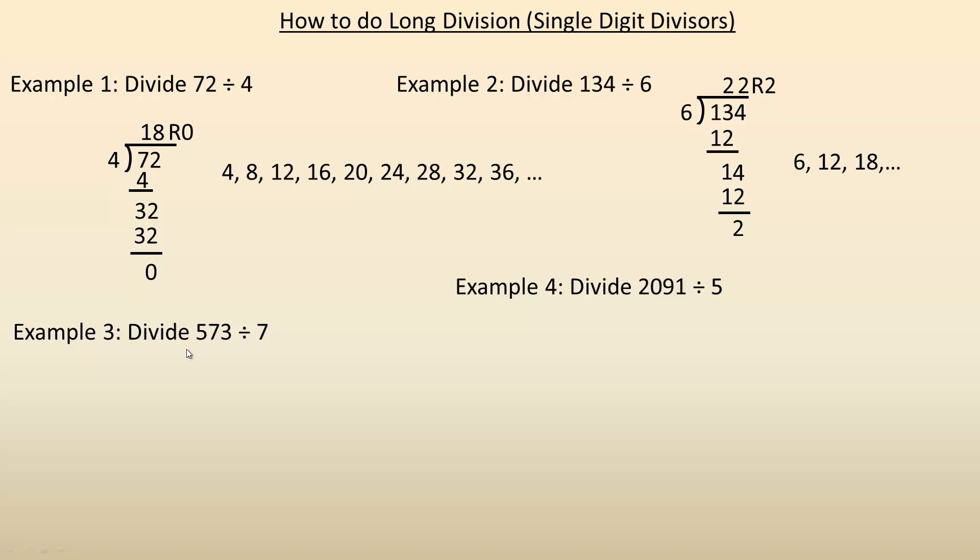Third example down here, we're dividing 573 by 7. So, again, you ask yourself, how many times does 7 go into 5? And you see, I wrote the first few multiples of 7, 7, 14, 21, 28, etc. 7 doesn't go into 5 even once, because 5 is smaller than 7.